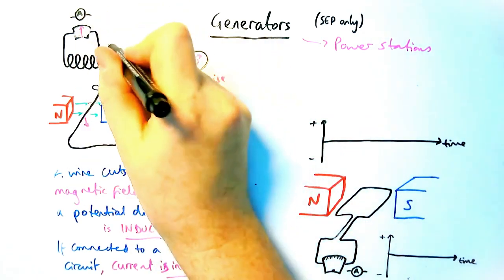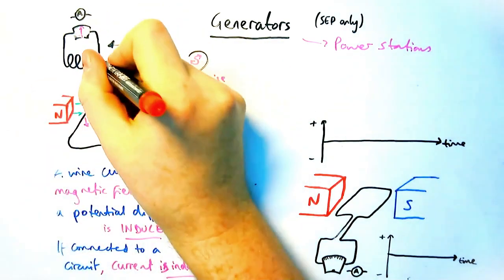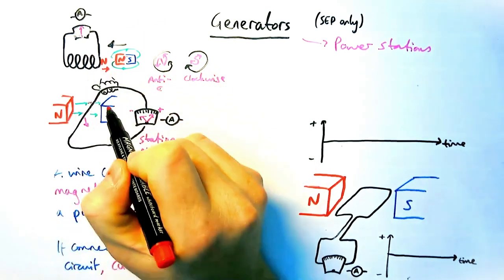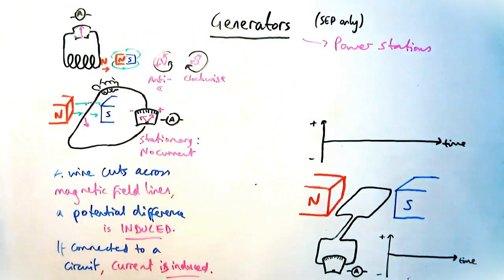and that means there has to be a north pole induced. It would flow anticlockwise to make it a north pole to oppose the magnet going in. If I was to move the magnet out to oppose that change,